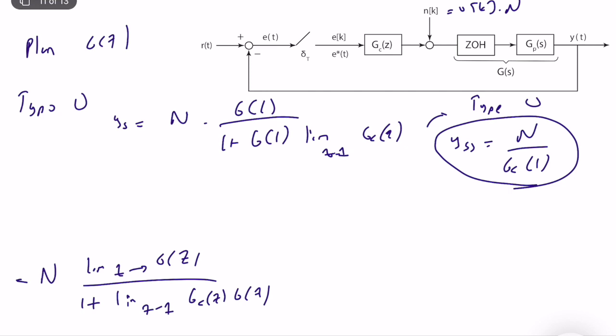If your controller is type-positive (n > 0), this limit goes to infinity, and y steady-state error will be equal to zero. So if your plant is type zero and you want zero steady-state disturbance response — perfect disturbance rejection — you need to increase the type of your controller. This is very similar to what we do with steady-state tracking error: if your plant is type zero and you want zero steady-state error for a unit step input, you increase the type of your controller.